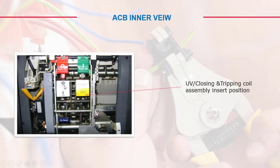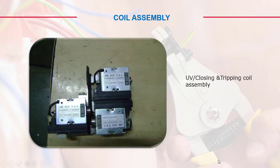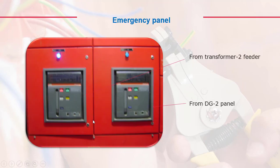This insert position is usually where problems occur in facilities. Inner staff can be trained easily to replace or address such issues. The components include the coil assembly, UV coil, closing and tripping coil assembly, and the emergency panel.